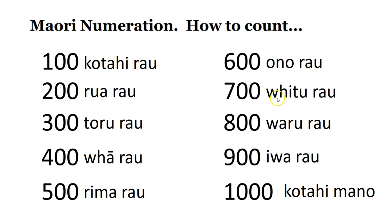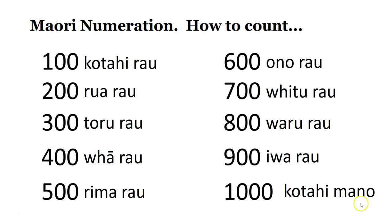Number 700, fitu rau. Number 800, waru rau. Number 900, iwa rau. And number 1000 — the word for 1000 is mano, and kotahi is one. So kotahi mano is 1000.